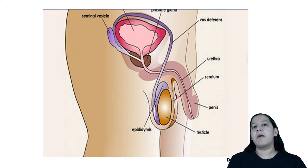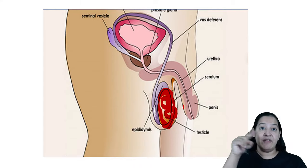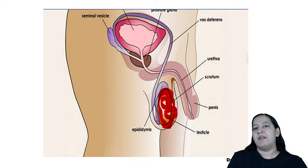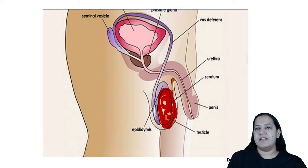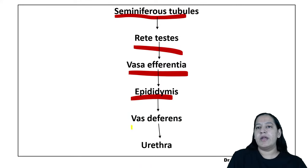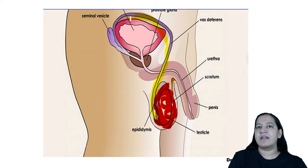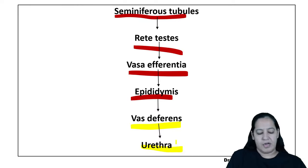The pathway of sperm: sperms are formed inside the testis in the seminiferous tubules from germ cells. From the lumen of the seminiferous tubule, they pass to the rete testis, then to the vasa efferentia and epididymis, then into the vas deferens which connects the epididymis to the urethra, and finally out of the body via the penis.